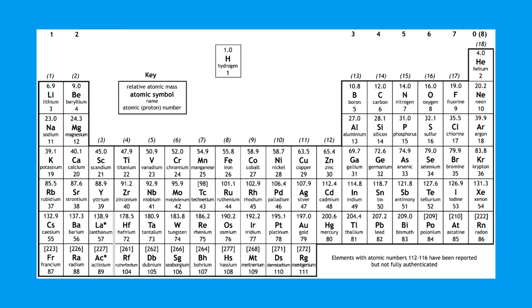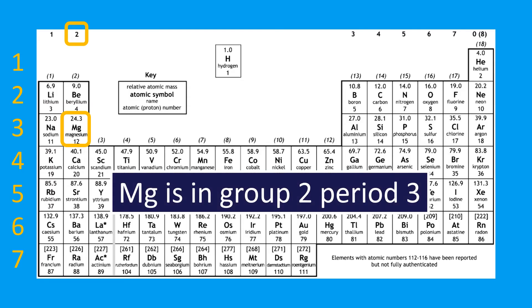Next example — magnesium. Very clearly it's in group two, that's up at the top there. Periods aren't quite as obvious, but magnesium is in period three. So magnesium is in group two, period three.